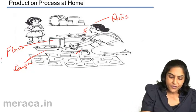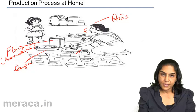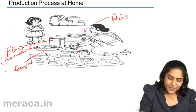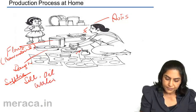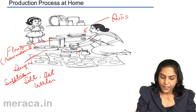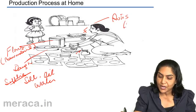We have flour here which is the raw material for making rotis. Along with flour, we have some other supplies — salt, maybe oil and water. All this is used to make a dough. From the dough, we get the rotis, which may be called the final product or the finished good.